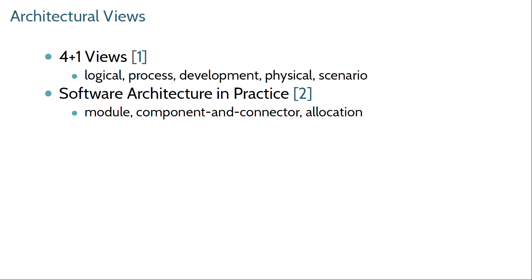Similarly, allocation considers things like who's going to work on which parts of the system. For small systems and teams, you typically just work that out as you go. But for very large projects with thousands of developers, you need to know what teams are responsible for which parts of the system.